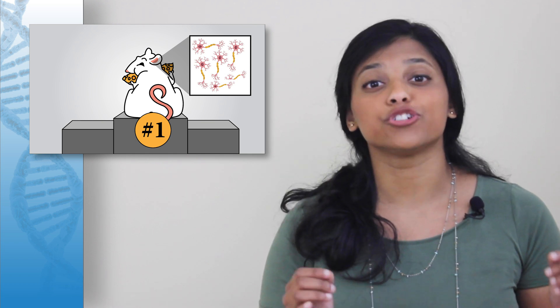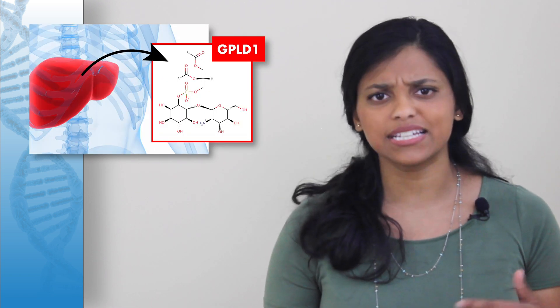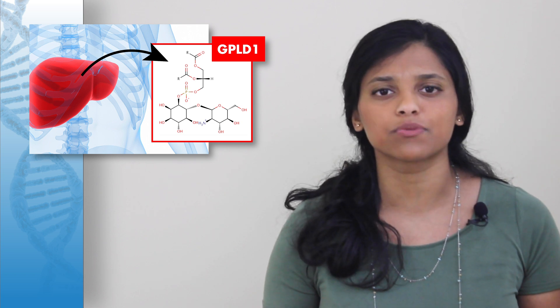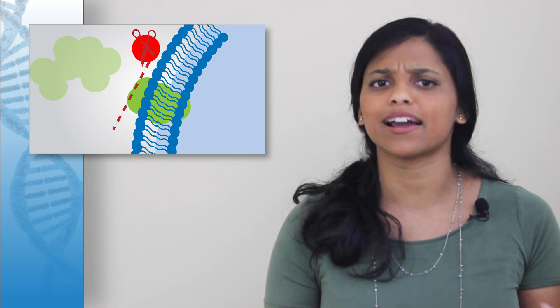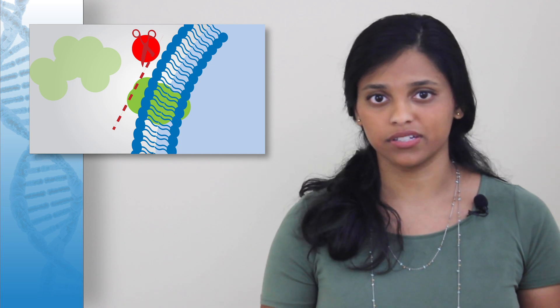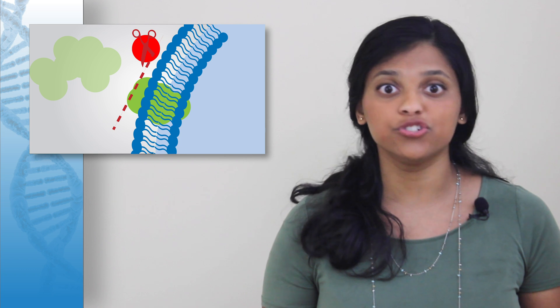So there's some sort of floating molecule in the plasma that can basically pass along the benefits of exercising. In searching for it, the authors honed in on GPLD1, a protein released by the liver which basically goes around snipping off fatty acid anchors that hold stuff to the outside of cells. The authors forced the liver to produce this enzyme by injecting the DNA for this protein into the tail of the couch potato mice, and they saw the same cognitive benefits as running on a wheel all day.